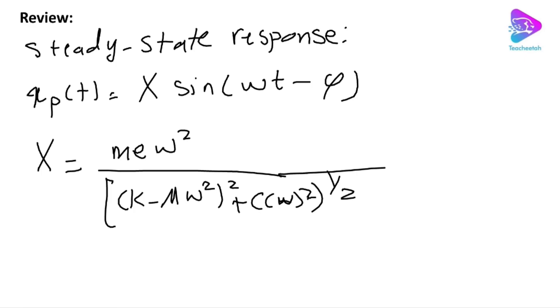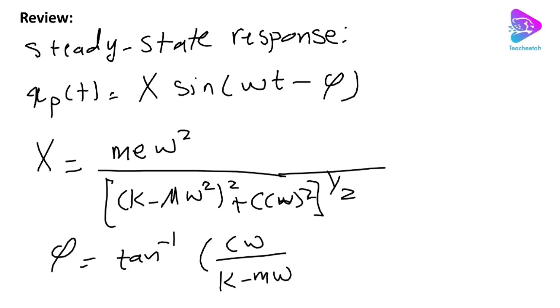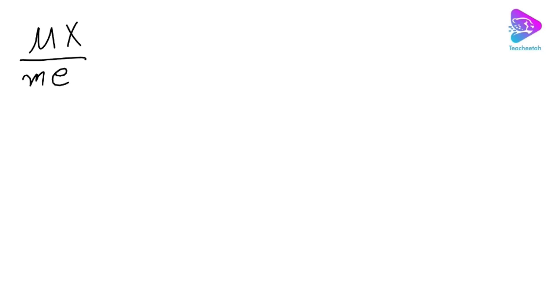The phase φ is equal to tan⁻¹(cω / (k − Mω²)). For this system we can also have a representation based on ζ (damping ratio) and r (frequency ratio). One important representation is based on the ratio MX / (me), where me is the eccentricity parameter. In many problems, the product me is given rather than m and e separately, so keep that in mind.